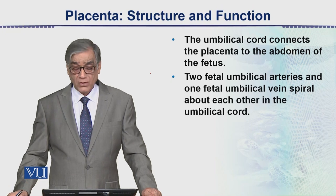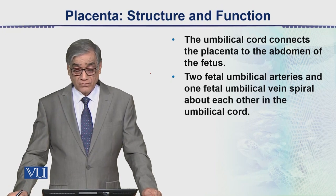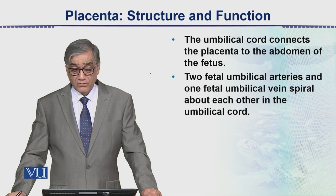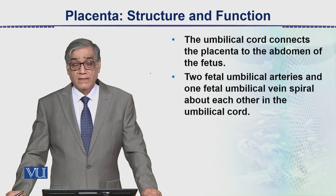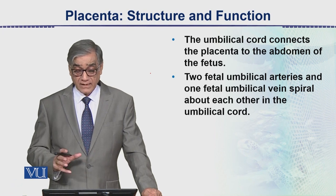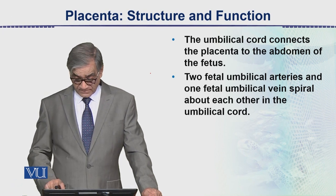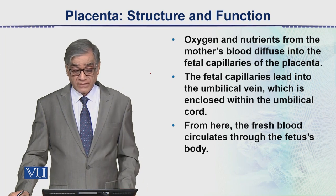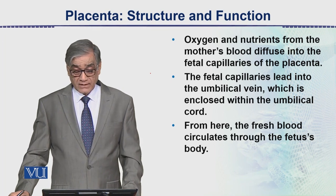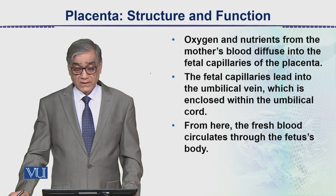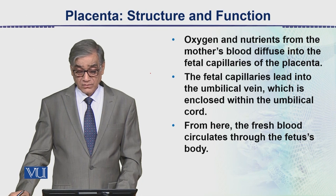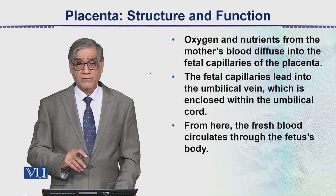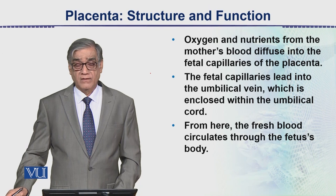The umbilical cord connects the placenta to the abdomen of the fetus through the navel. There are two fetal umbilical arteries and one fetal umbilical vein that spiral about each other in the umbilical cord. Inside the umbilical cord we have seen that the arteries and veins are spirally arranged with each other.